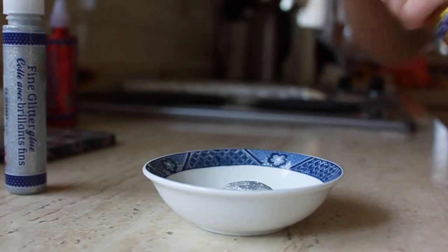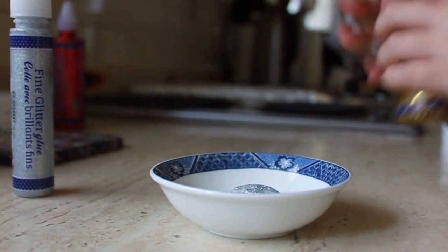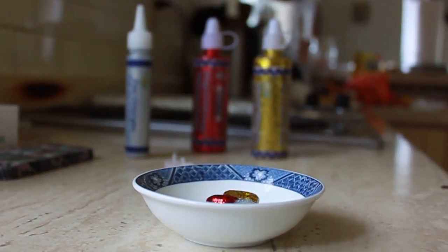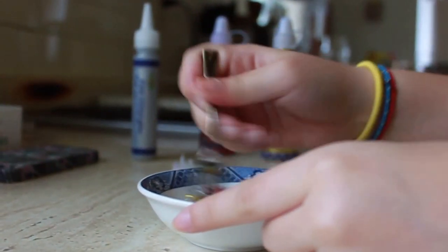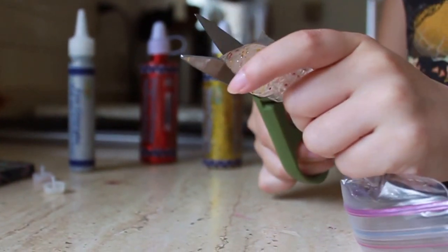So I'm going to be adding silver, gold, and red. And once we've poured all the glitter in, we're going to take our small fork and just mix all this glitter in. Cut a corner off your plastic bag.